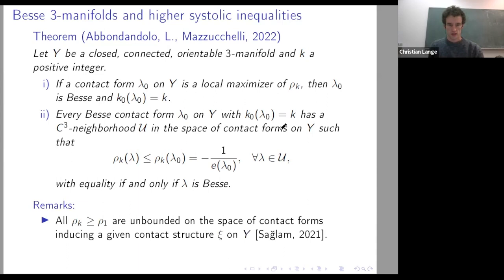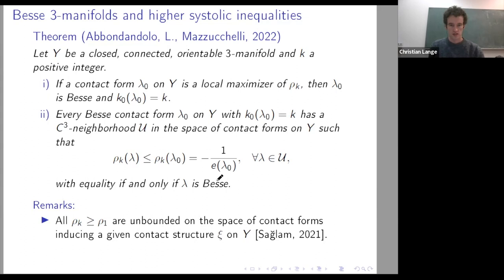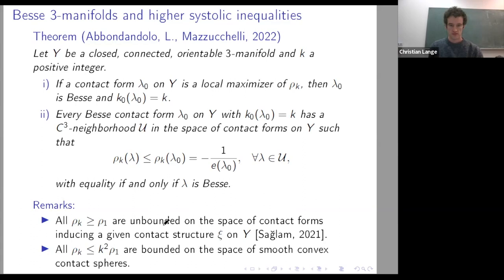Two more remarks: these σ_K's are bounded from below by σ₁, and σ₁ has been shown to be unbounded by Saglam, even looking only at contact forms inducing a given contact structure. On the other hand, these systolic ratios are bounded proportionally to σ₁ if you look at boundaries of smooth convex bodies in ℂⁿ, because there σ₁ is universally bounded. For the example of the ellipsoid in dimension four with coprime integers p,q: there is one exceptional orbit of minimal period p, another of minimal period q, all others have minimal period pq, so K₀ = p+q−1 and the volume is pq, giving ratio pq.